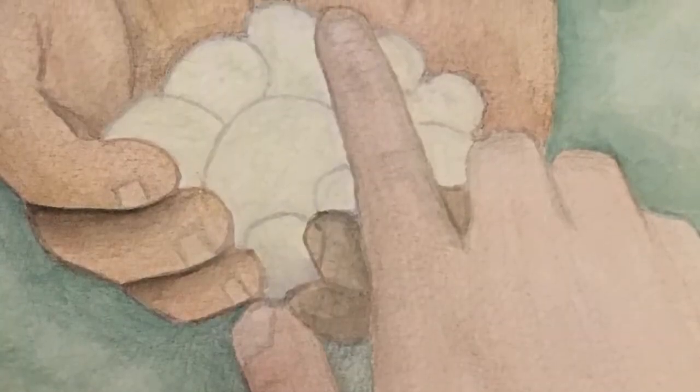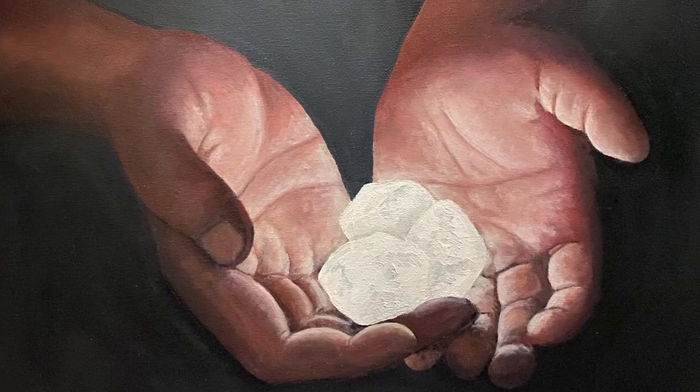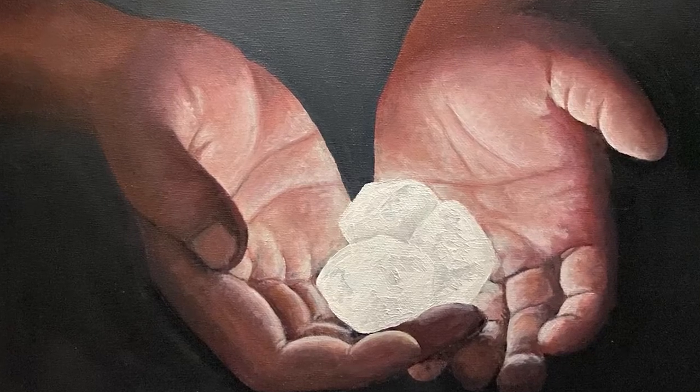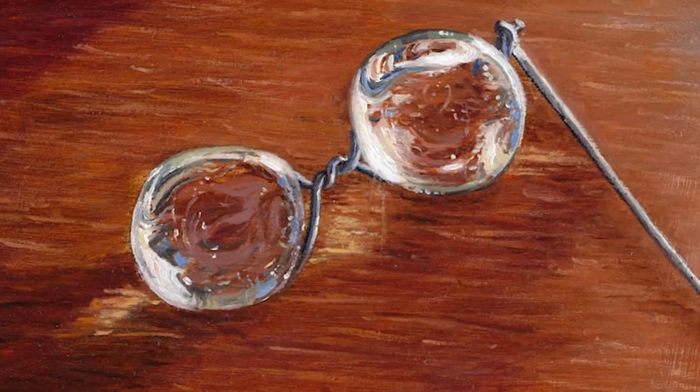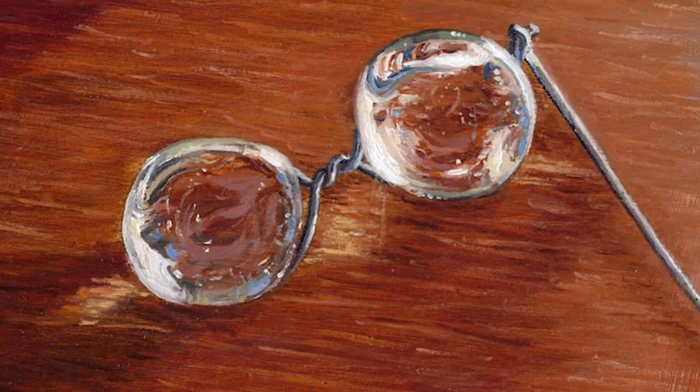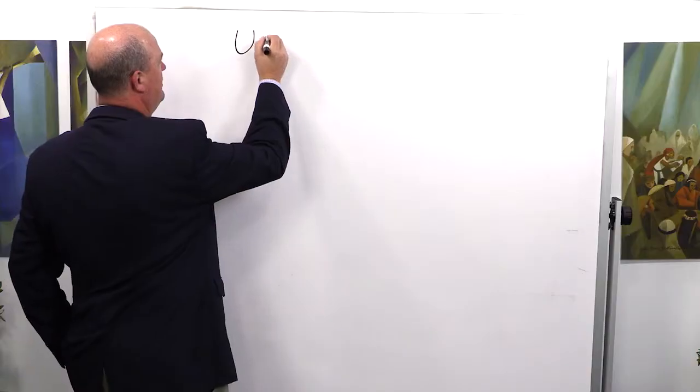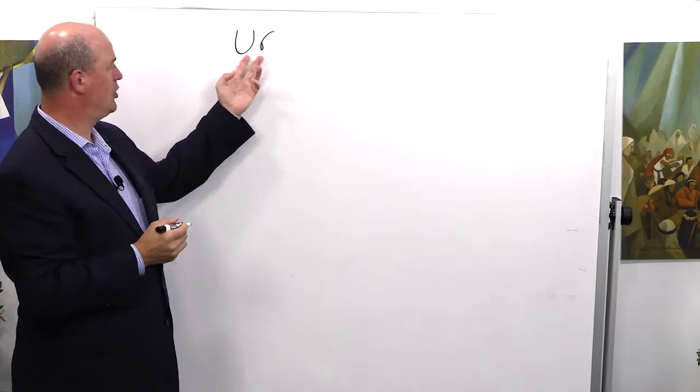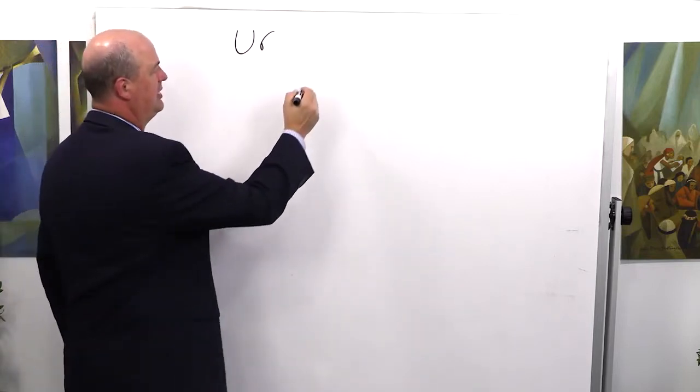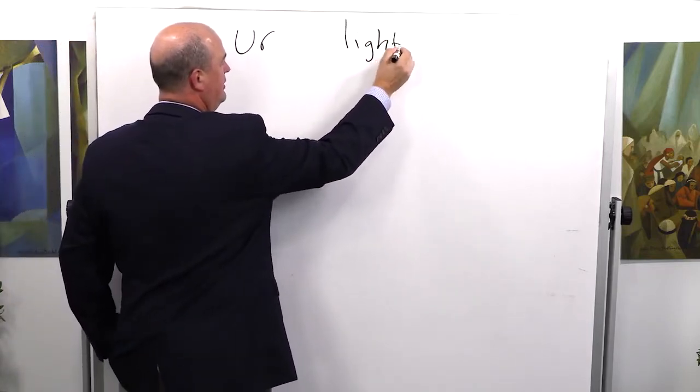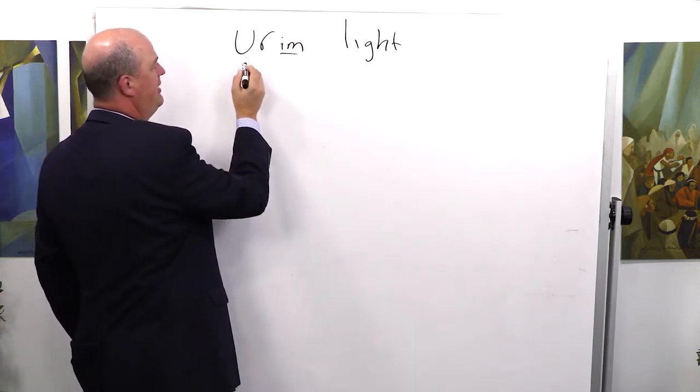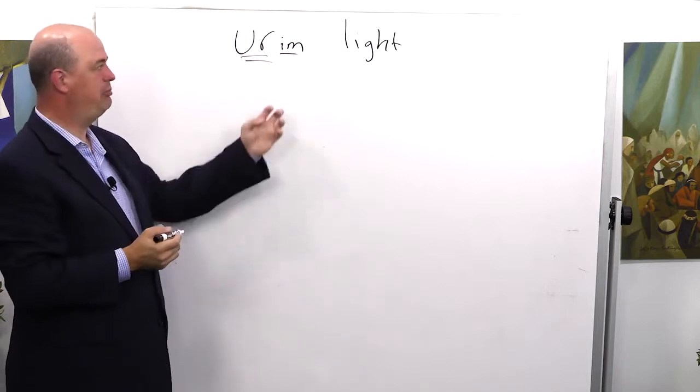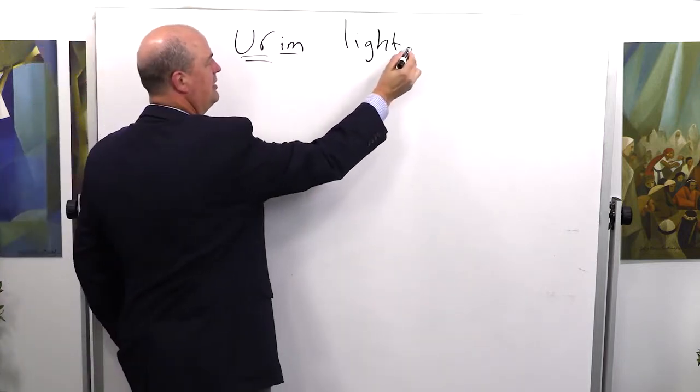What's beautiful about the symbol of stones that shine light is the idea of Urim and Thummim, which we are all quite familiar with in the Church. It turns out the word Urim in Hebrew means light, and when you put the 'im' on the ending of that word, it actually makes it the plural, so it's lights.